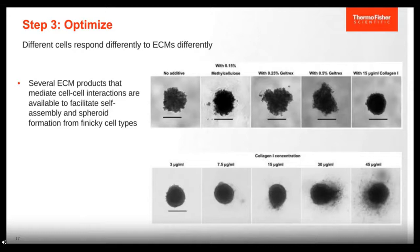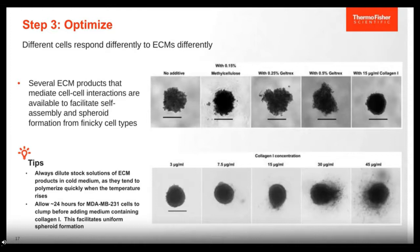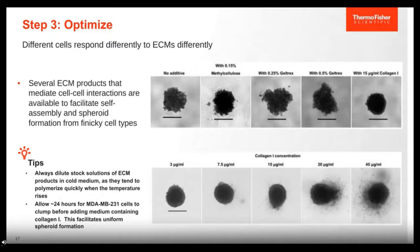As you can see, going with higher amounts of ECM reaches a point where too much is detrimental to forming a nice spheroid. A couple of tips when doing this optimization: many ECMs are temperature dependent and will polymerize when approaching 37 degrees, so make sure the medium you're using is pre-chilled. For the 231 cells specifically, when you seed the cells, it's recommended to let the cells sit in the well for 24 hours to let them clump, and then add your medium containing your ECM. This technique helps facilitate uniform spheroid formation for this particular cell line.